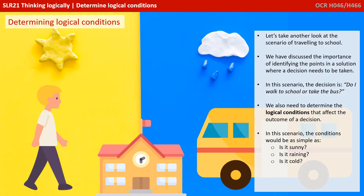Let's take another look at the scenario of travelling to school. We've discussed the importance of identifying the points in a solution where a decision needs to be taken. In this scenario the decision is, do I walk to school or do I take the bus? We also need to determine the logical condition that affects the outcome of the decision.